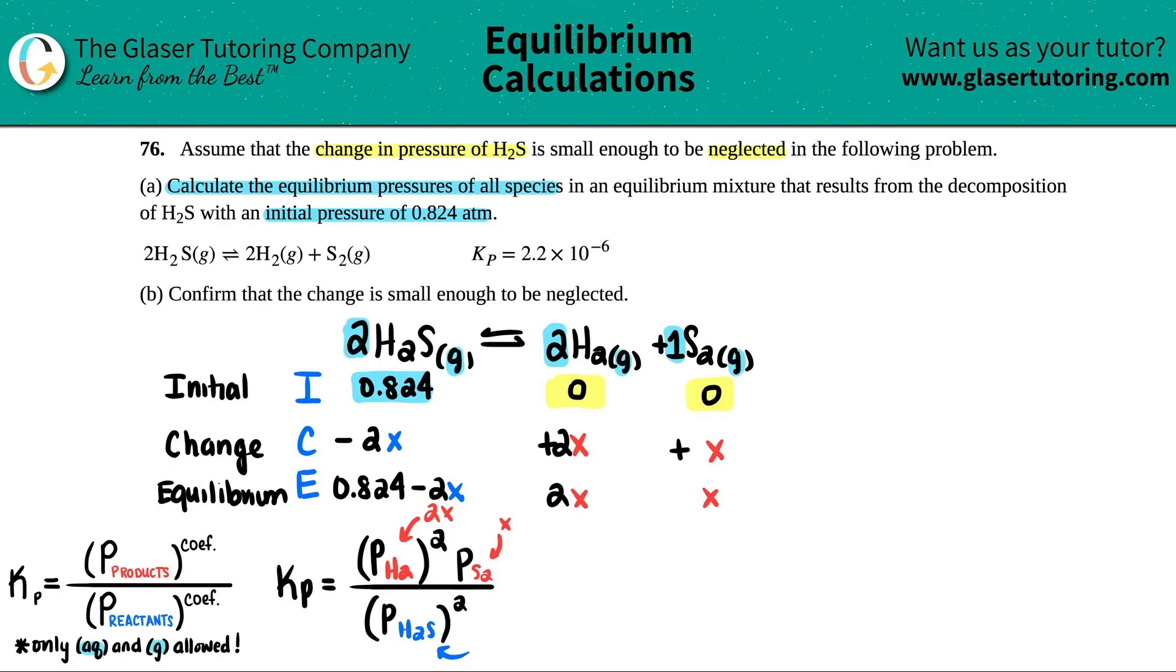They said that we're going to assume the change in the pressure of H2S to be small enough to be neglected, aka left out. And the change in the pressure. How are we going to do that? Well, remember what a Kp that's being very, very, very small means, right? A Kp less than 1 means that at equilibrium, we favor the reactant side.